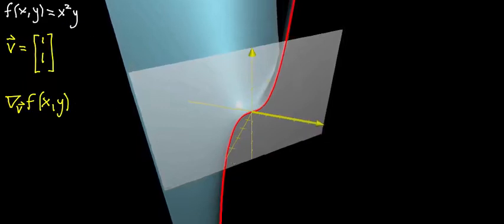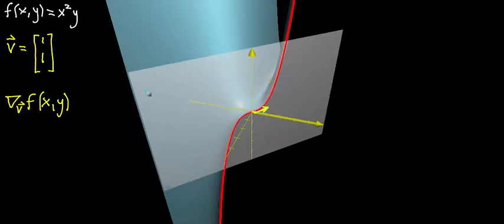This vector v, you'd think of as living on the xy plane, and it determines the direction of the plane we're slicing with. On the xy plane, the vector is (1, 1) — it points in that diagonal direction. You take the whole plane and slice your graph.